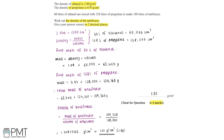This question is worth four marks. The first mark is for finding the mass of 60 litres of ethanol, the second for finding the mass of 128 litres of propylene, the third for the process of dividing mass by volume to find density, and the fourth for the correct final answer of 1.01 grams per centimetres cubed to two decimal places, giving us the full four marks.